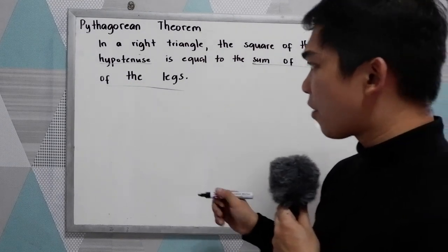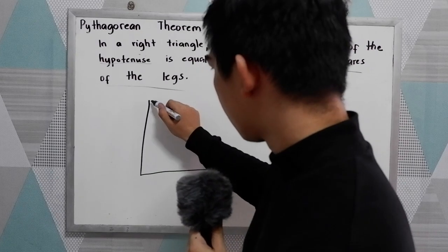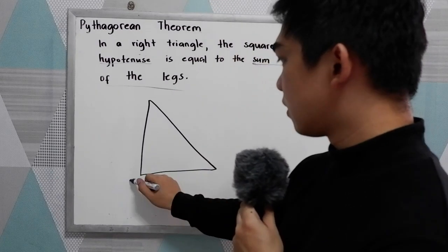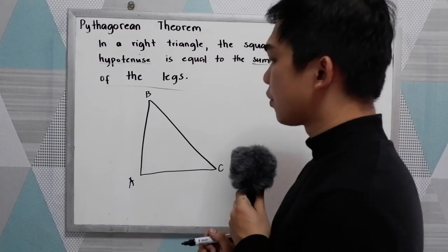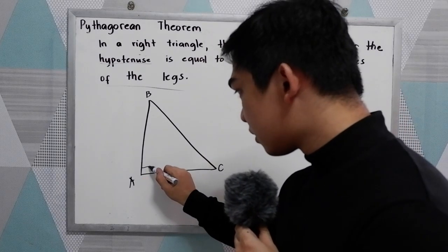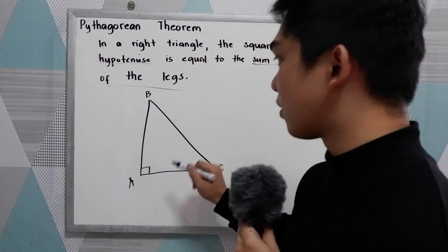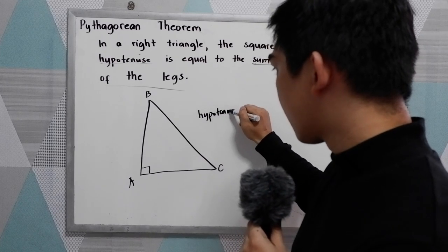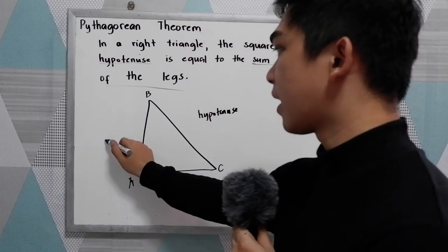Let's say we have our right triangle. I will name it triangle ABC. So we have our 90-degree angle here, and the side opposite the 90-degree angle is the hypotenuse. This is our hypotenuse. And these are our two legs.